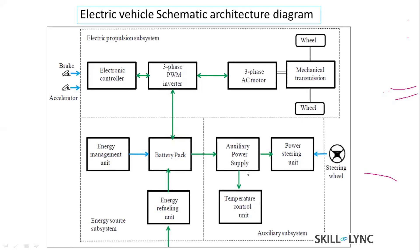There are also auxiliary components powered from the battery pack through a DC-DC converter, which steps down from high voltage DC to low voltage DC. One such unit is the power steering unit, which needs power from the battery and helps the steering wheel operate.